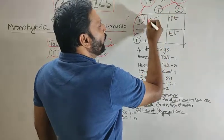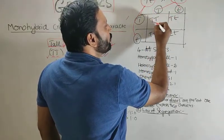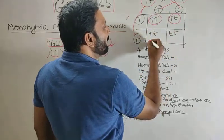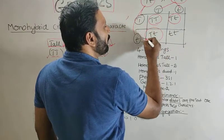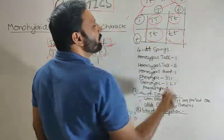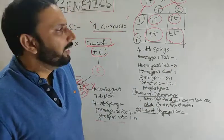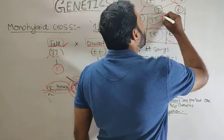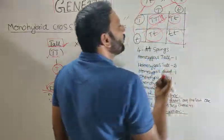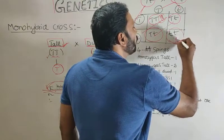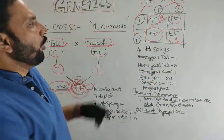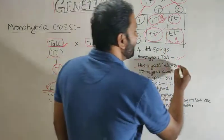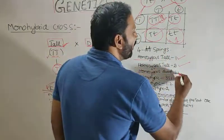Capital T and capital T fuse to form capital TT. Capital T and small t fuse to form capital T small t. Capital T and small t fuse to form capital T small t. Small t and small t fuse to form small tt. So four offsprings are formed: one is homozygous tall (TT), two are heterozygous tall (Tt), and one is homozygous dwarf (tt).